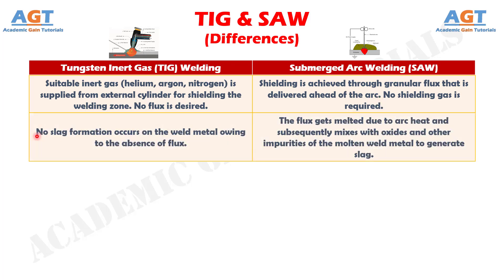Number 8: in TIG welding, no slag formation occurs on the weld metal owing to the absence of flux, whereas in submerged arc welding, the flux gets melted due to arc heat and subsequently mixes with oxides and other impurities of the molten weld metal to generate slag.